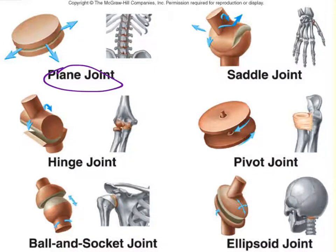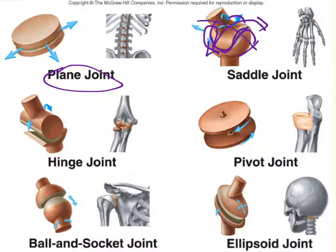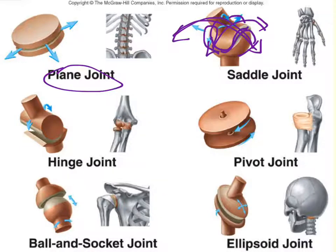The saddle joint also shows the shape of the two bone surfaces — it looks almost like a saddle, cupped together. That allows for movement in two planes of motion. An example is found in the carpometacarpal joint of the thumb only.